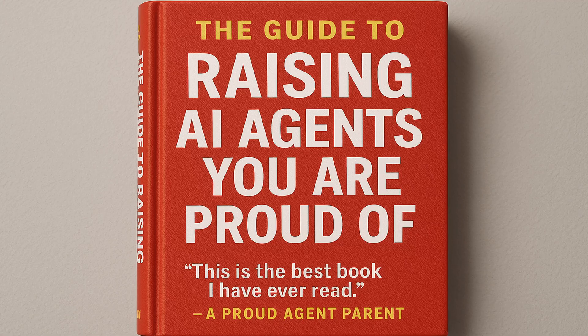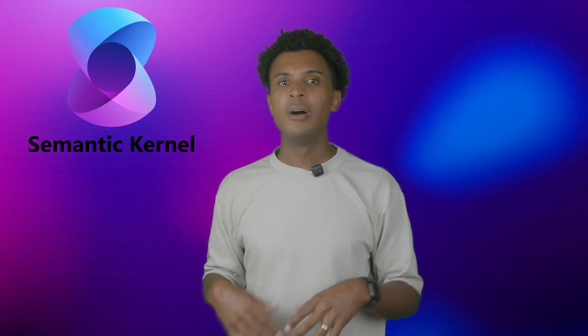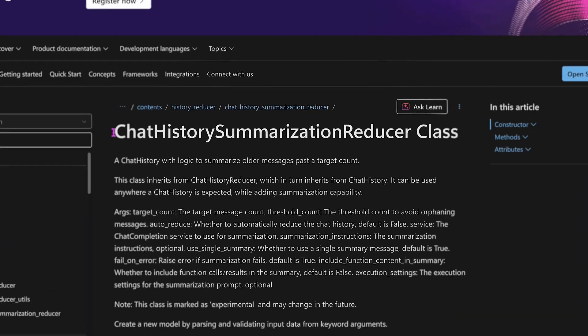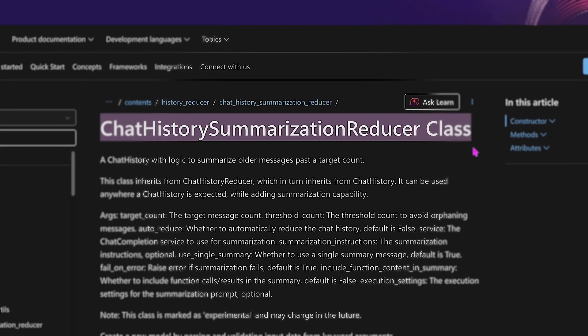Fortunately for us, when building AI agents, we don't need to read a bunch of parenting books to improve the situation, because we can use agentic frameworks like Semantic Kernel, which has features like the chat history summarization reducer. What this does is allow us to create a summary of the chat history between a user and an agent up to a certain amount of message counts, which we can decide on. This helps the agent with better context management of the past as it grows, and should lead to better control and performance of the current interaction.